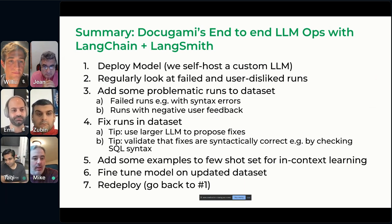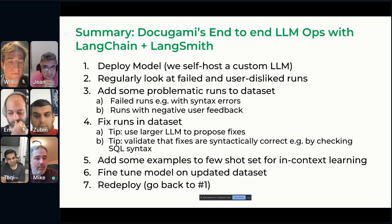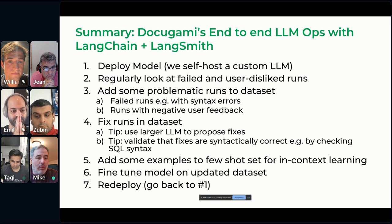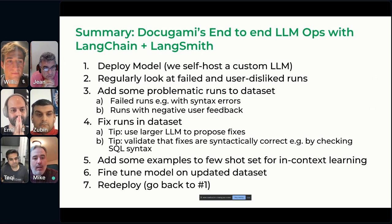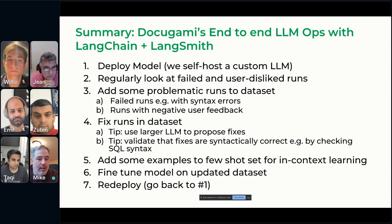A couple of tips we found useful: we use a larger LLM to propose fixes to mistakes made by smaller LLMs — we might use a 70-billion-parameter model to fix up mistakes of the smaller model. We do a lot of post-processing to make sure fixed runs are syntactically correct — XQuery or SQL is valid — and then fine-tune and deploy again. On our technology stack: we use Apache Spark as the execution engine, host LLMs locally in the same Kubernetes cluster, and are rolling out NVIDIA Triton as the platform to host models, with Redis for vector database and caching.